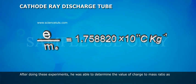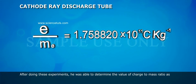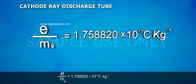After doing these experiments, he was able to determine the value of charge to mass ratio as e/me equals 1.758820 × 10^11 Coulomb per kg.